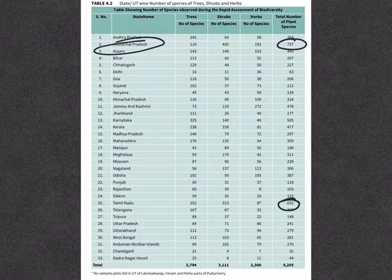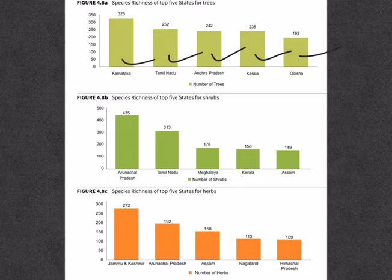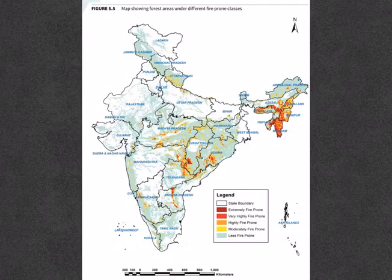In terms of species richness for trees, the top five positions are occupied by Karnataka, Tamil Nadu, Andhra Pradesh, Kerala, and Odisha. For shrubs, the top five are Arunachal Pradesh, Tamil Nadu, Meghalaya, Kerala, and Assam. In terms of herbs, the top five are Jammu & Kashmir, Arunachal Pradesh, Assam, Nagaland, and Himachal Pradesh.